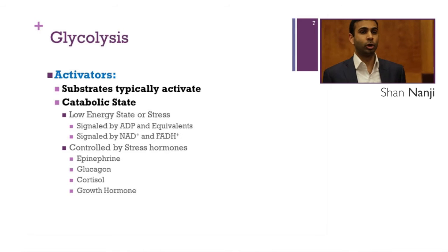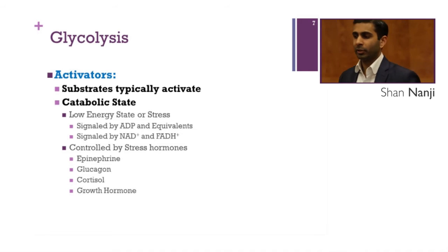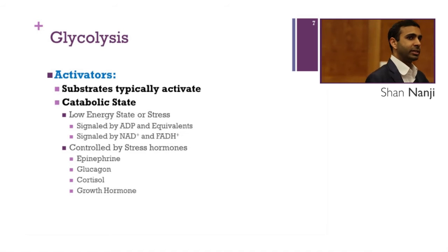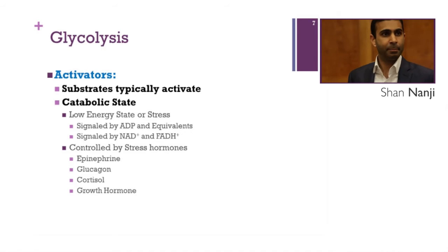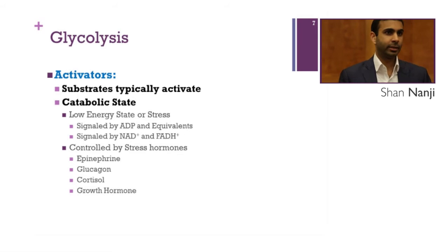The catabolic state is also controlled by stress hormones, which act as activators: epinephrine, glucagon, cortisol, and growth hormone. Epinephrine is the shortest-acting stress hormone. Glucagon and cortisol are long-acting stress hormones. Glucagon is the major controller of most catabolic pathways, and growth hormone serves to replenish material broken down during the catabolic period.